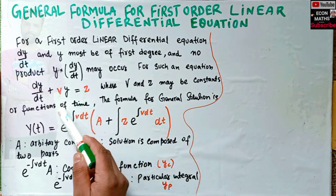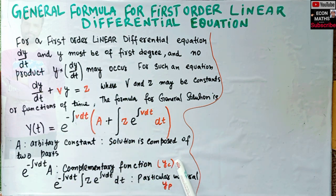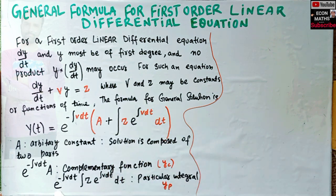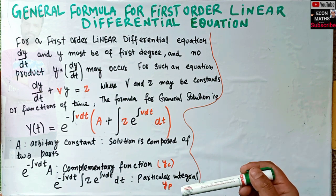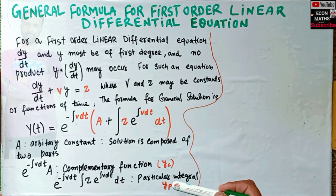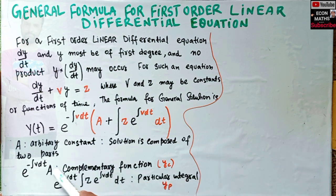The first part — e to the power minus integral of v dt — is called the complementary function. When we multiply this by the integral of z times e to the power integral of v dt with respect to dt, that product is called the particular integral.